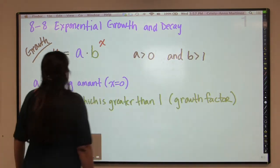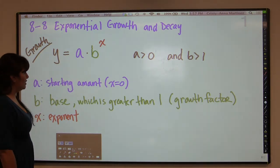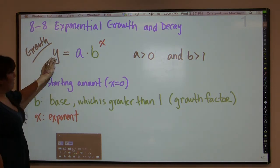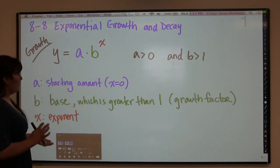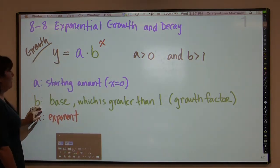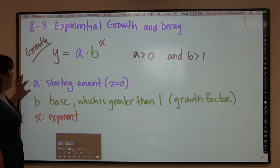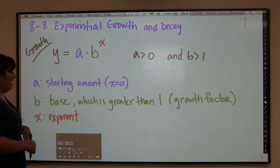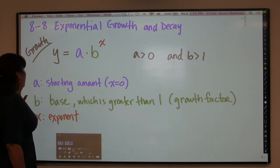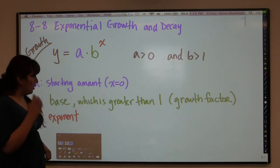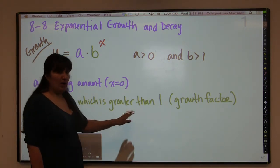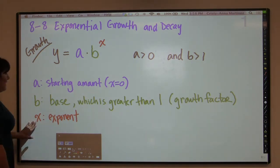We're going to start with growth. You will recognize the formula y equals a times b to the x from the last section, with a being larger than zero. It's the same formula for growth and decay — the only thing that makes a difference is b, which for growth is larger than 1, called the growth factor. A represents the starting amount, b is the base or growth factor, and x is the exponent.